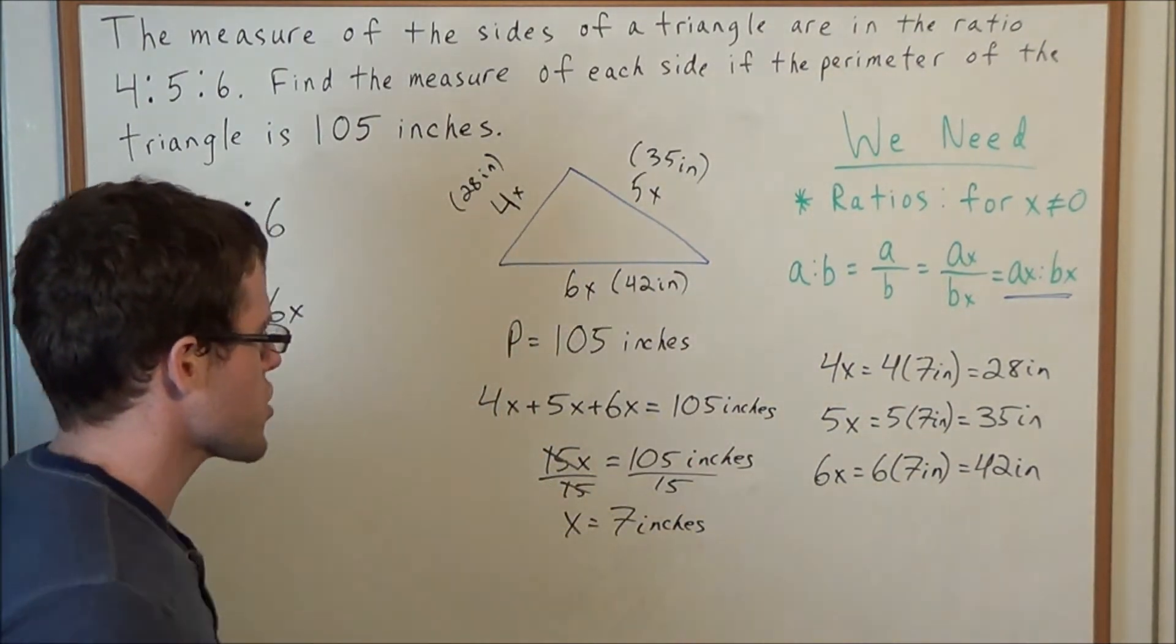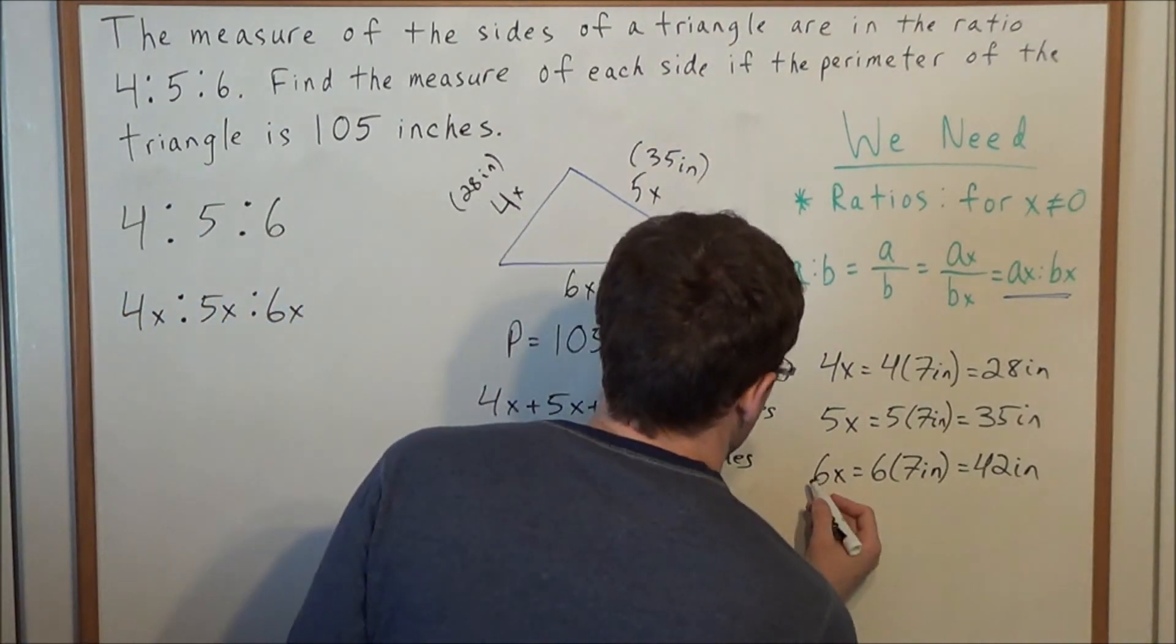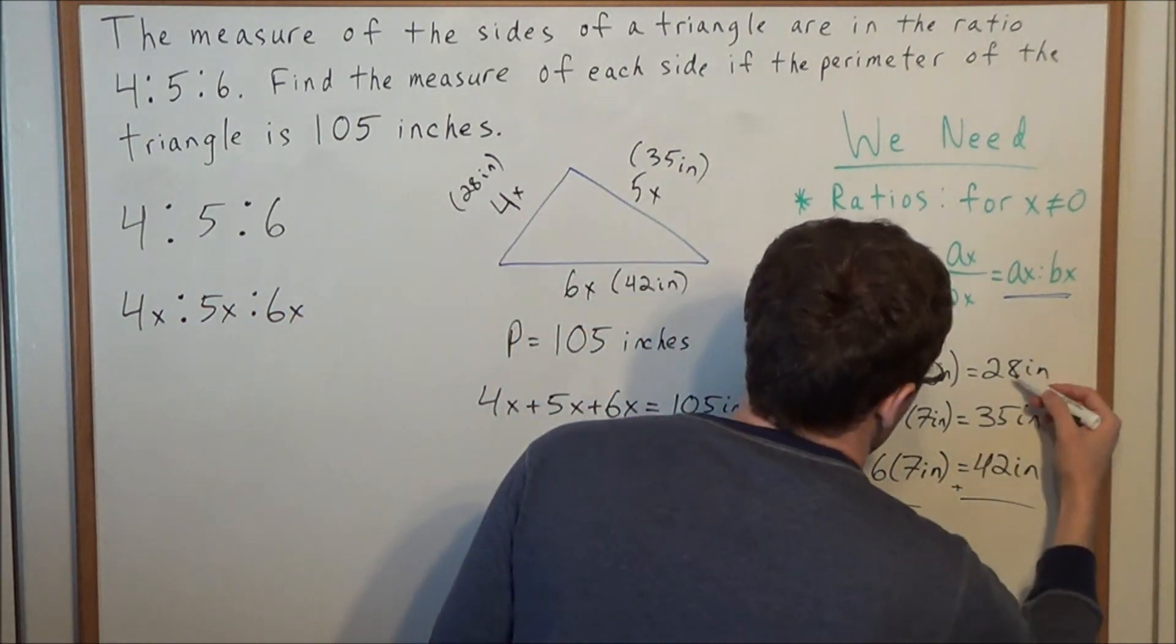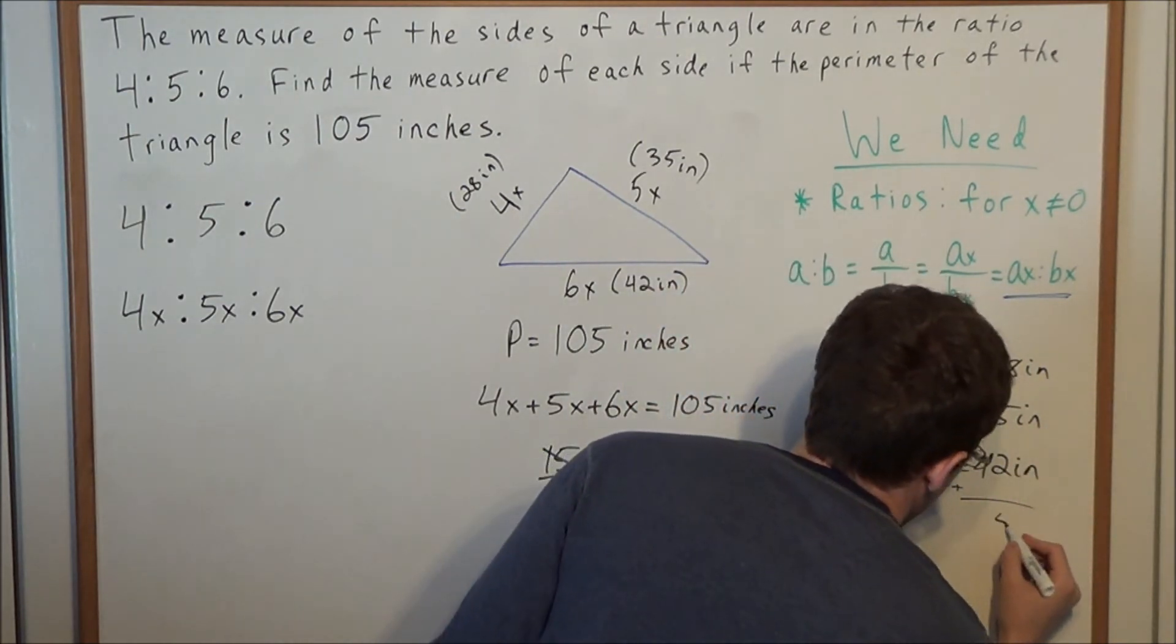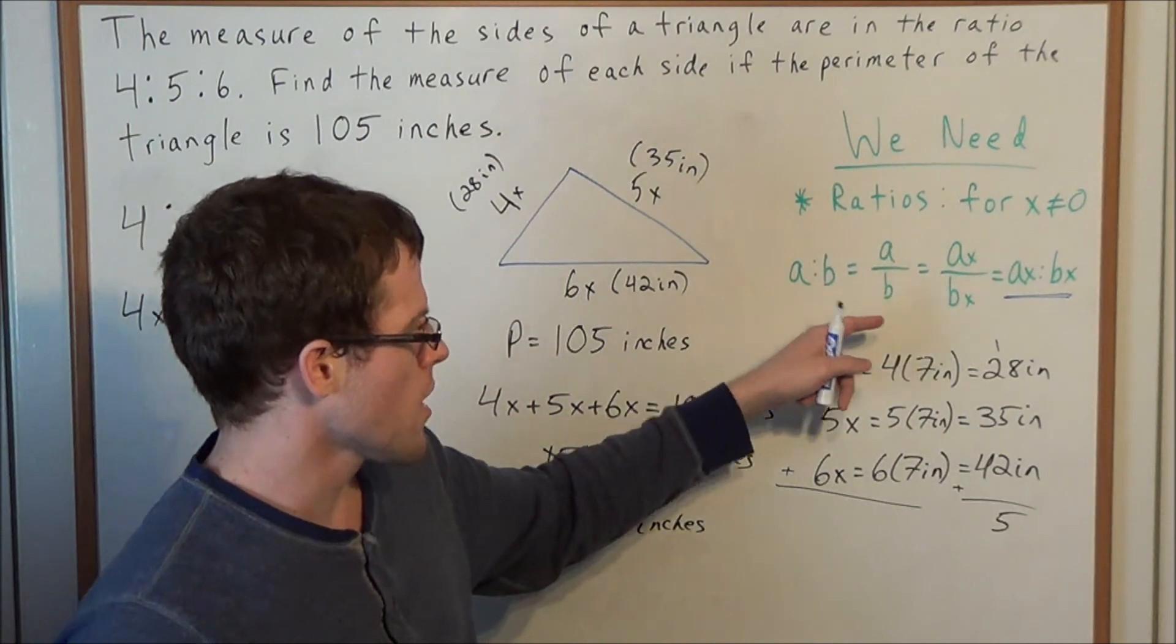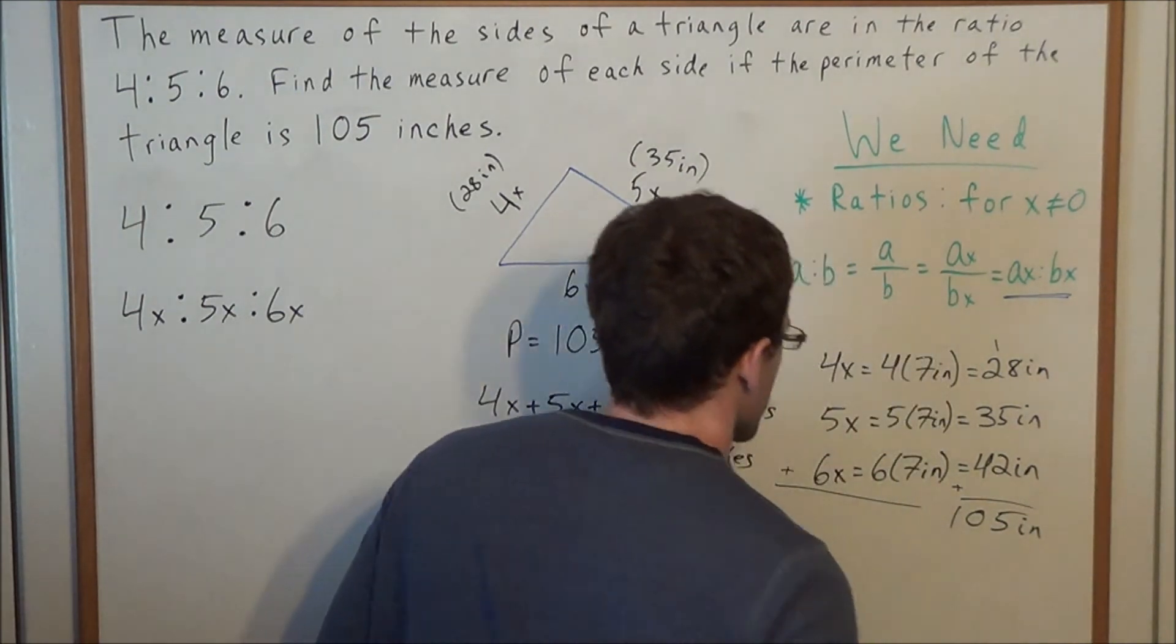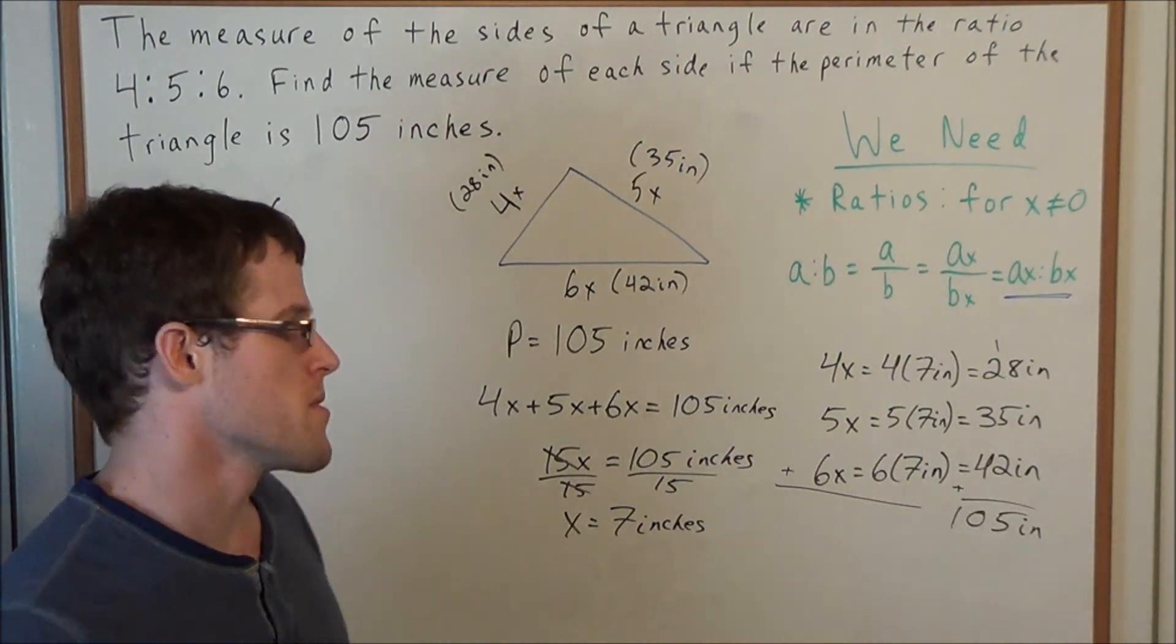Now there's two things we should check. First, we should add these three sides together. 28 plus 35 plus 42 gives us 8 plus 5 is 13, 13 plus 2 is 15, carry the 1. 1 plus 2 is 3, 3 plus 3 is 6, 6 plus 4 is 10. So when we add all those values together, we get 105 inches, which is the perimeter of this triangle.